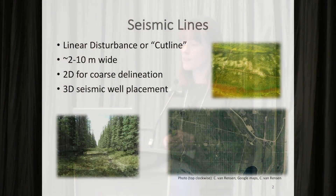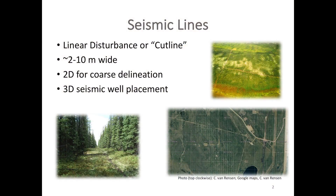Most of you are probably familiar with what a seismic line is, but just for those who may not be, these are linear disturbances cleared through a forest corridor, also known as a cut line. They're used for energy exploration or oil and gas exploration. They tend to range from about 2 meters up to 10 meters wide.